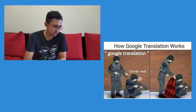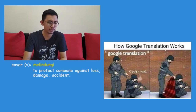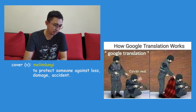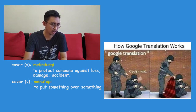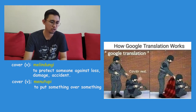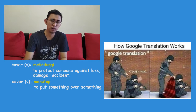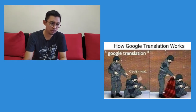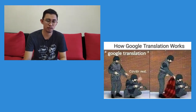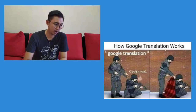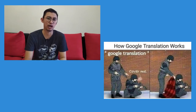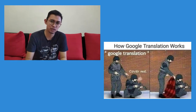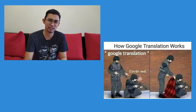Next meme: 'How Google Translation works' — 'Cover me!' — and then someone literally covers the other person. So 'cover me' actually means 'protect me' or 'give me cover,' but it's taken literally here as physically covering someone. This is a joke about how Google Translate can get things wrong, especially with phrases or full sentences. That's why it's best to use Google Translate one word at a time, so you can check the meaning and whether it fits the context.